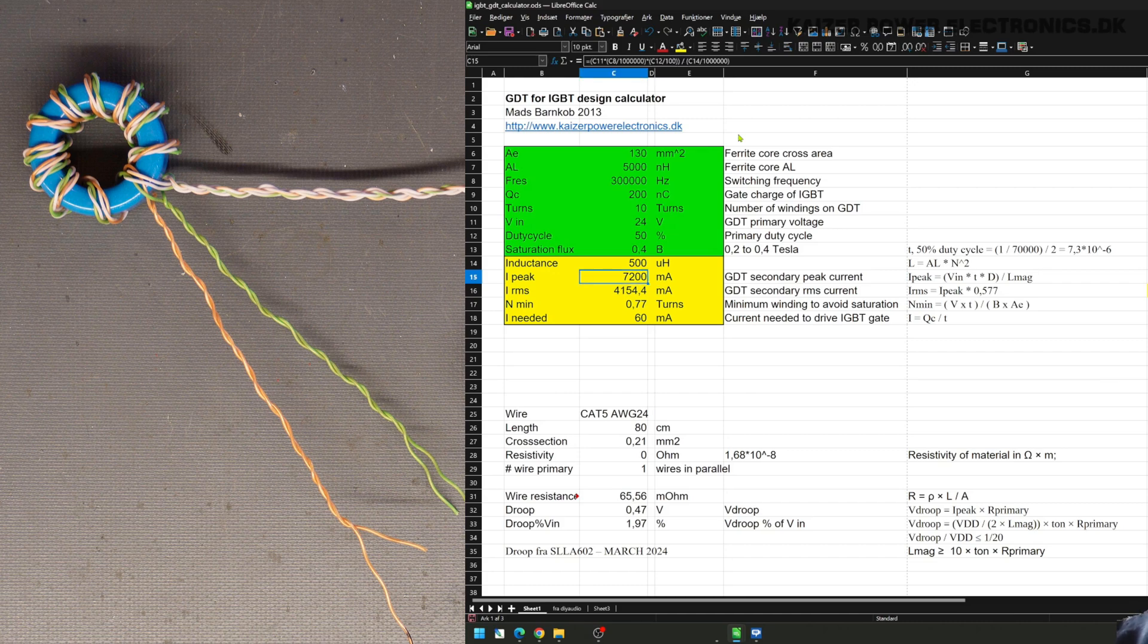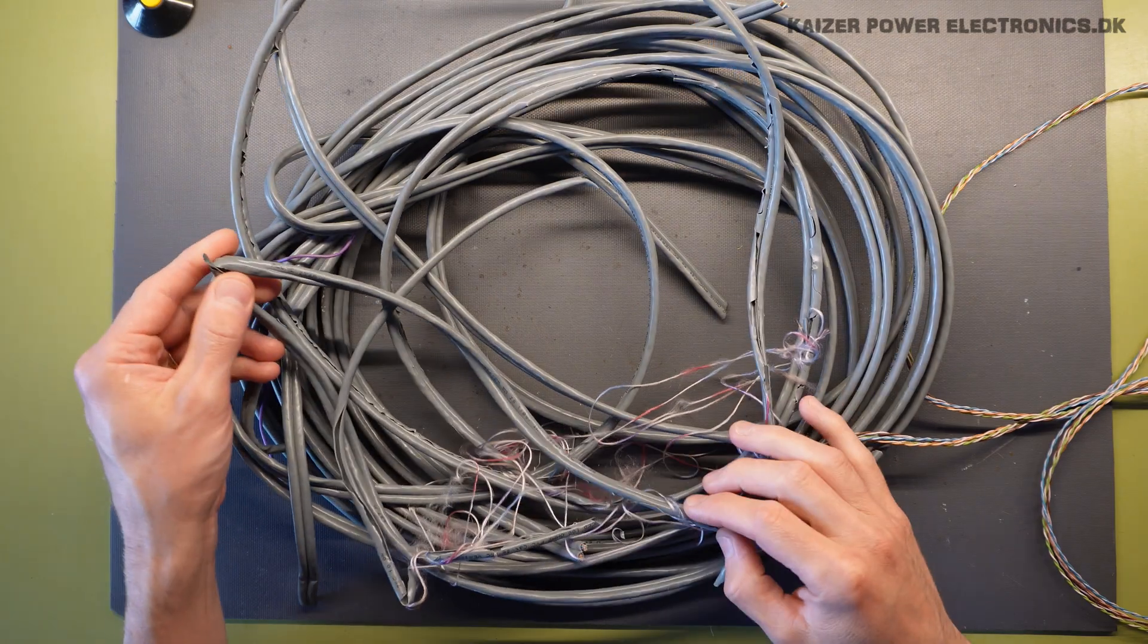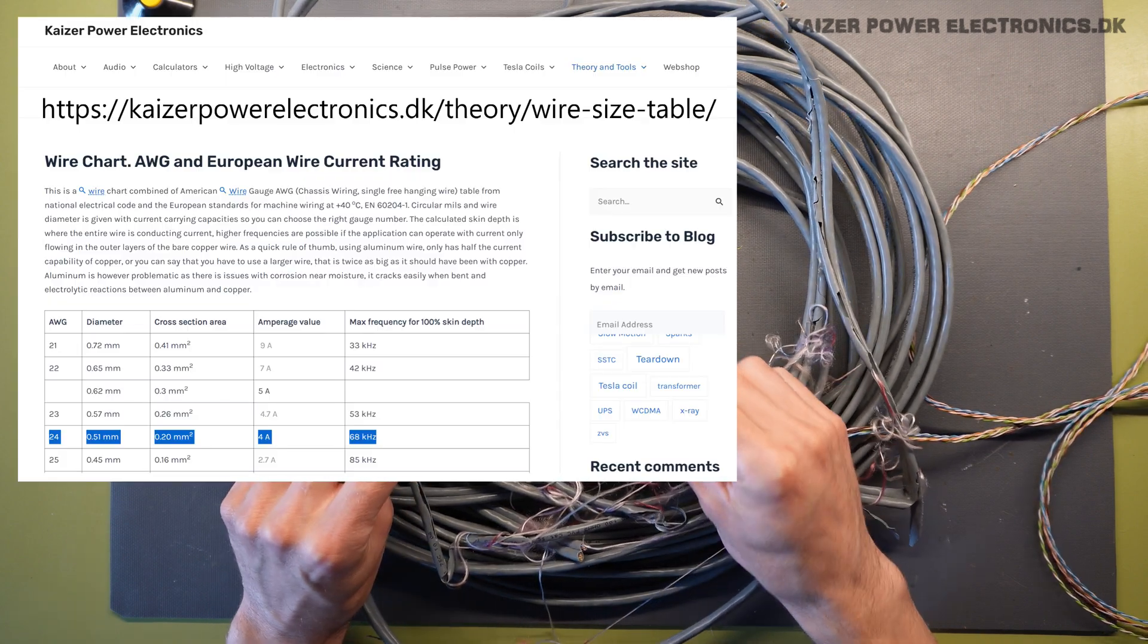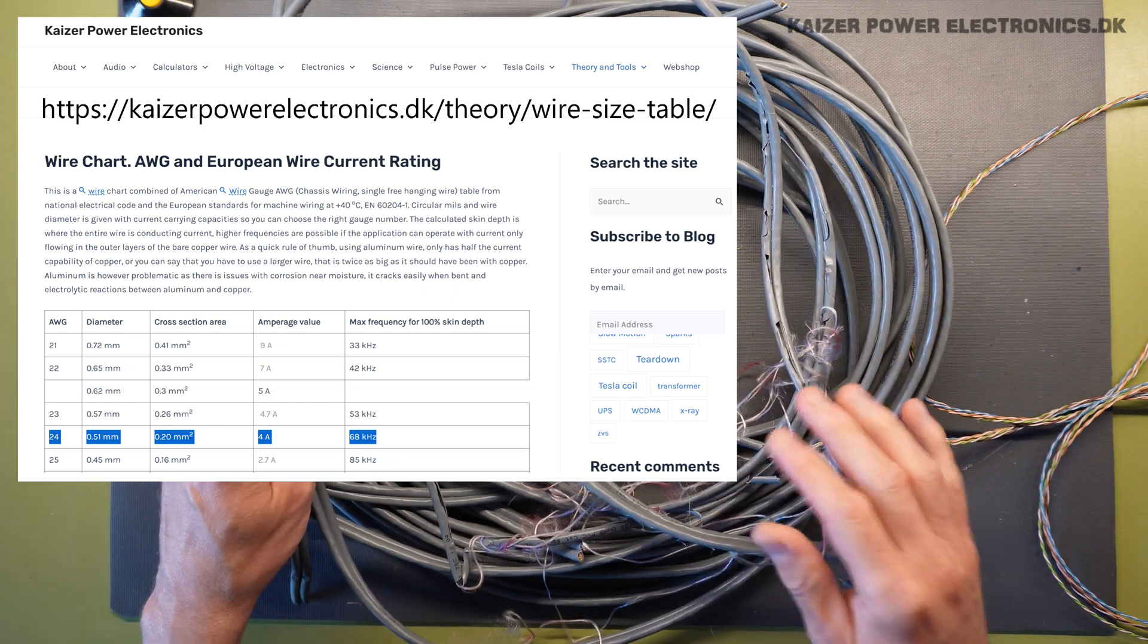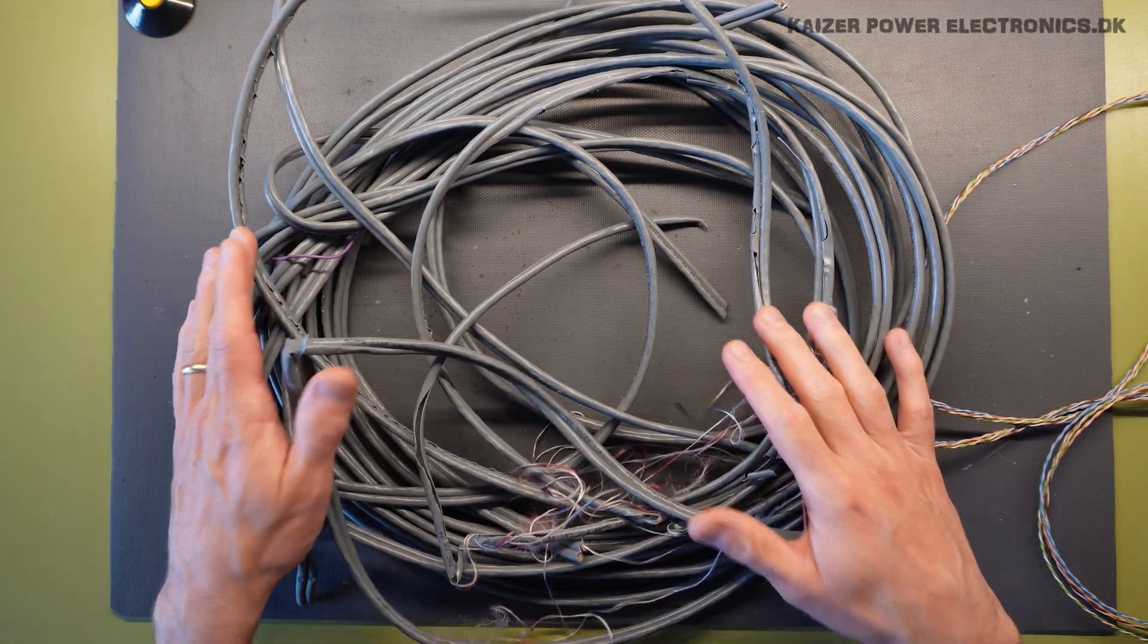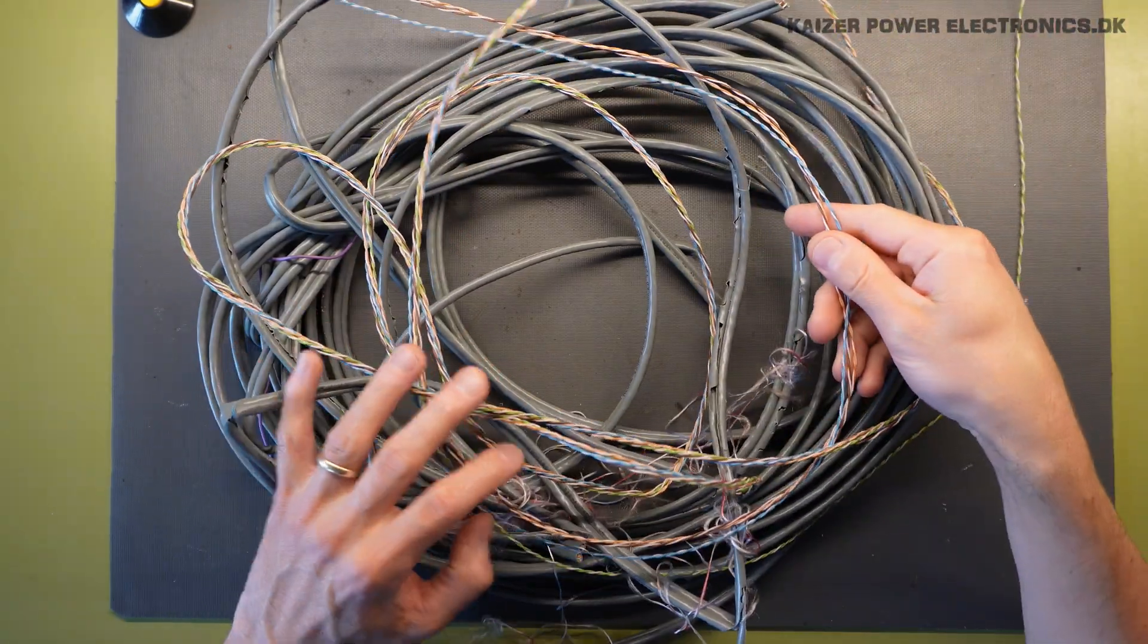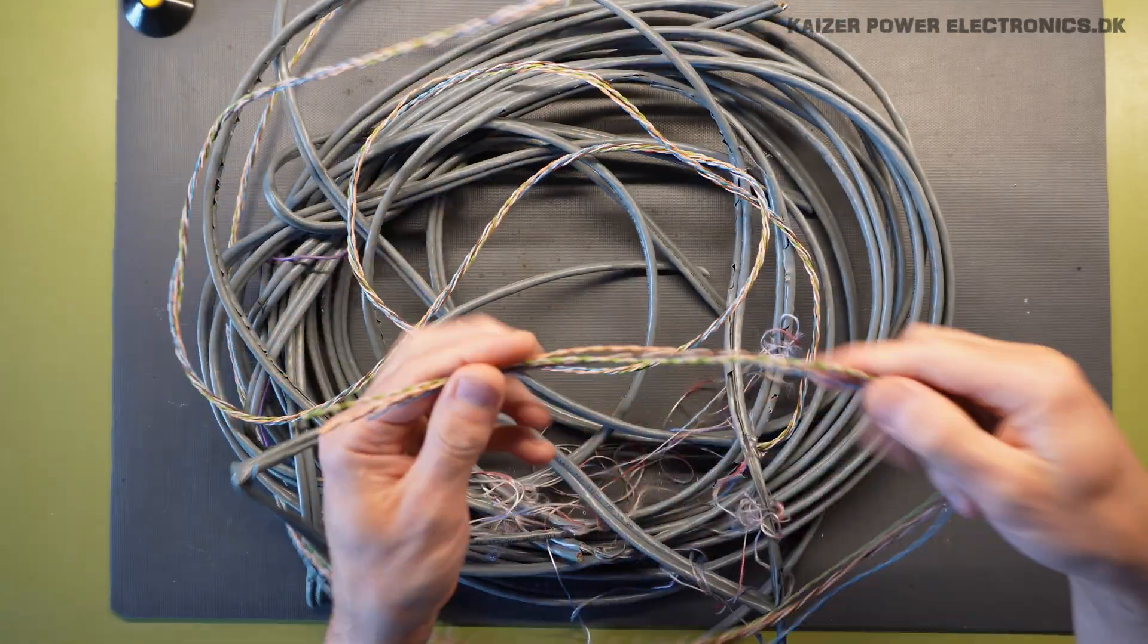For winding gate driving transformers I really do like using old ethernet cable. And if we read on the side of this it is 2x4 pairs of 24 AWG size and that is some 0.2 square millimeters. And it's actually perfect for the currents that we see in the secondary sides of a gate drive transformer. And the good thing about this if we take a look at the actual wire coming out of this, it's all twisted pairs which will help us reduce our leakage inductance. And that is exactly what we want.